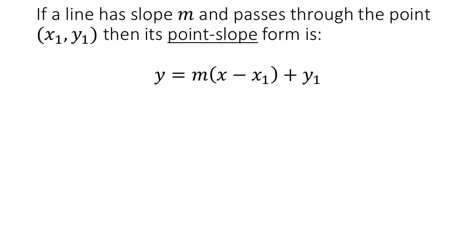Let's start with the basics. If we know the slope of a line, m, and we know that it passes through a point, x1, y1, we can use that information to put together an equation for the line, and the form is y equals m times (x minus x1) plus y1. There's a lot of letters going on there, and it's important to distinguish which ones represent numbers and which ones represent variables.